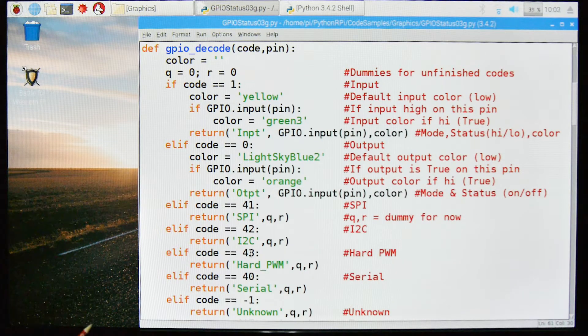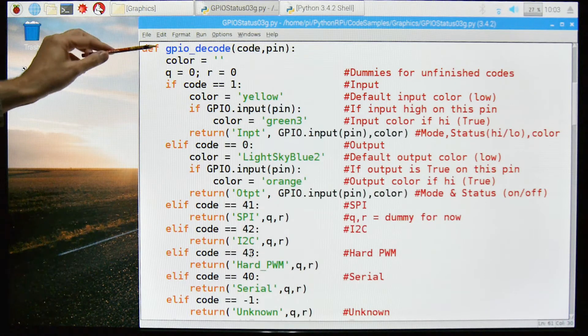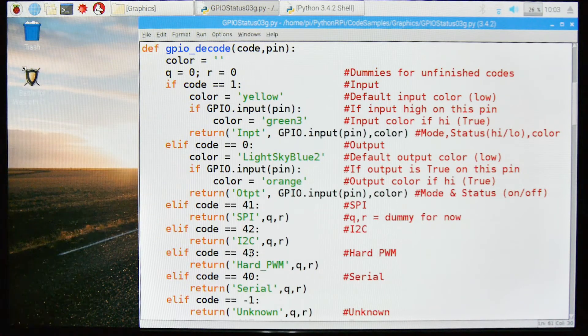Let's look at our first function. It's this GPI decode that I wrote and you pass it the code and the PIN. And what this is going to tell us is how the PIN is set up. Is it set up as an input PIN, an output PIN, as hardware, PWM, as serial, as SPI, I2C, whatever. So that's what this program is going to do for us. It's going to send us back what type of PIN or how the PIN has been set up. As you know, a lot of PINs on the Pi can be set up in many different ways and we need to know that.